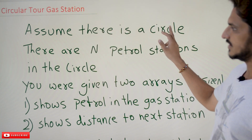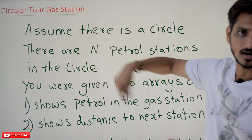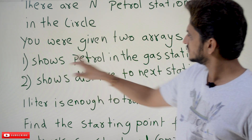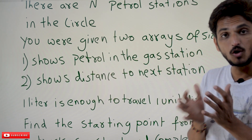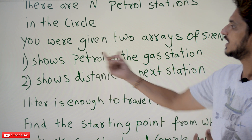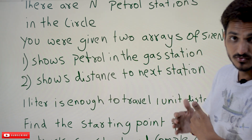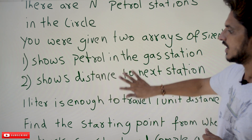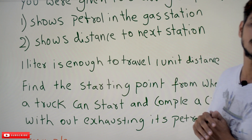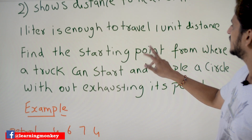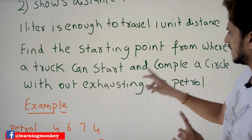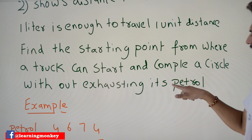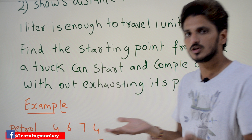Coming to today's class, assume there is a circle and there are N petrol stations in that circle. You are given two arrays of size N. The first array shows how many litres of petrol are available at each gas station. The second array shows the distance from the present gas station to the next gas station. One litre is enough to travel one unit of distance. Find the starting point from where a truck can start and complete a circle without exhausting its petrol.